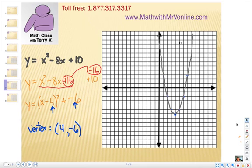So from the original function, x squared minus 8x plus 10, I completed the square. I had to add 16 and subtract 16 at the same time. You factor it into its vertex form, and that tells us our vertex was 4, negative 6. All right, one last example.